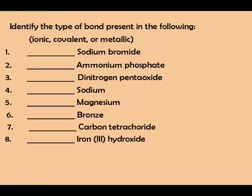Restart when you have an answer. The first one you should have gotten was ionic, because one element is a metal and the other is a nonmetal. The next one you should have gotten was also ionic, because those ions are held together with ionic bonds.